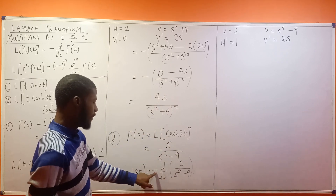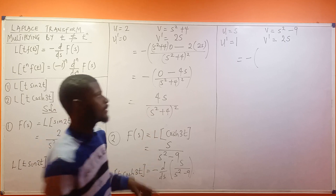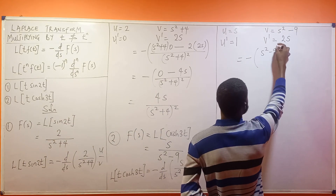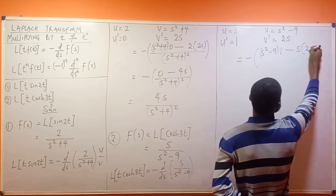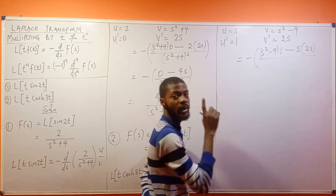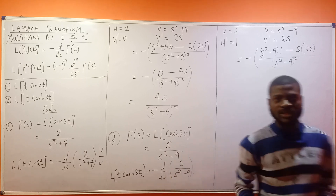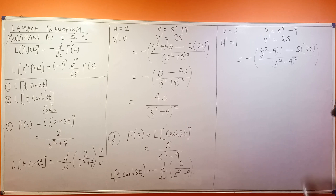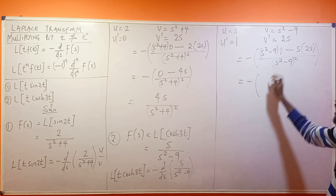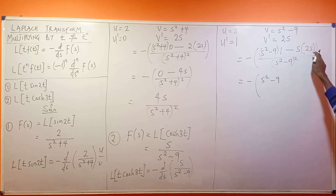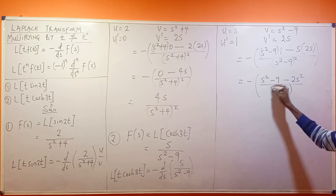Applying the quotient rule, we write minus, then open bracket: v first, which is s squared minus 9, multiplied by u prime which is 1, minus u which is s multiplied by v prime which is 2s, all divided by v squared, which is (s squared minus 9) squared. Expanding: 1 times (s squared minus 9) gives s squared minus 9, and s times 2s gives minus 2s squared, divided by (s squared minus 9) squared.